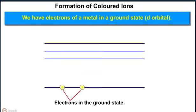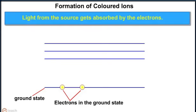We have electrons of a metal in ground state d orbital. Light from the source gets absorbed by the electrons.